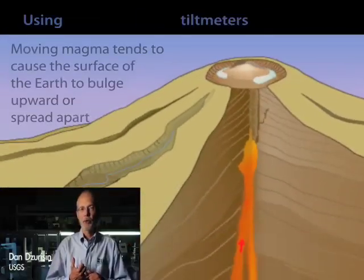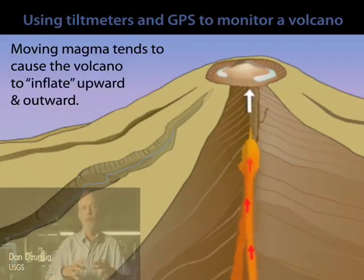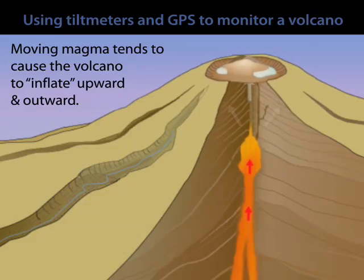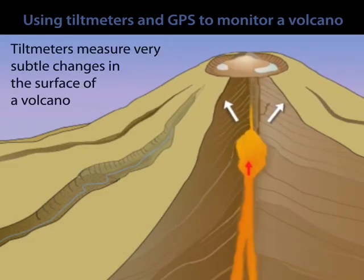One of the things moving magma tends to do is it tends to deform the surface of the earth. It tends to cause the surface to bulge upward or to spread apart.